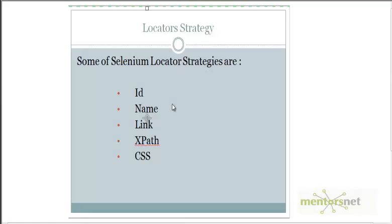Hello, welcome back. So far we have discussed various locator strategies used by Selenium to identify web elements — those are id, name, link, and xpath. We have seen how xpath can solve your problems with different kinds of functions and expressions. Things that cannot be resolved by id or name can be resolved using xpath. There is another elegant way of locating web elements called CSS path.